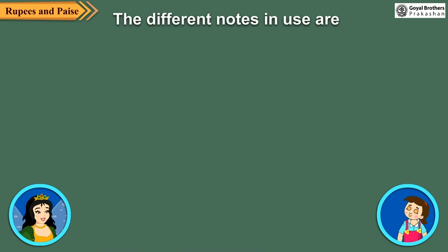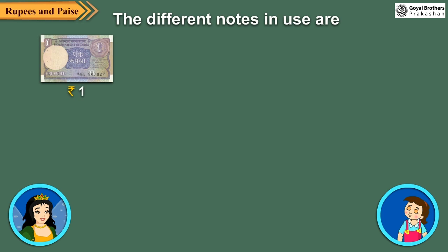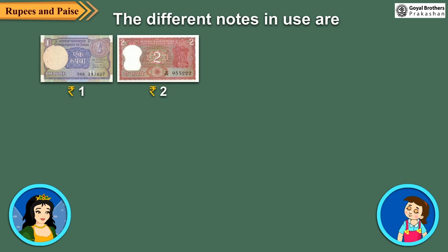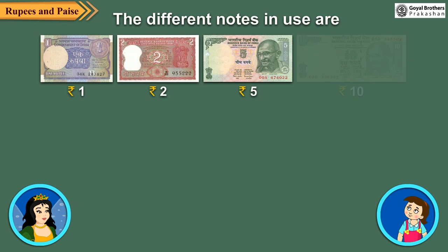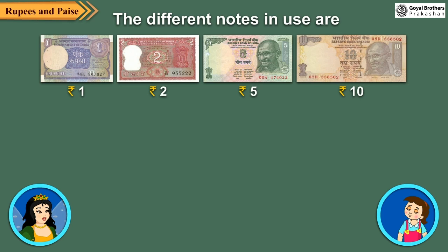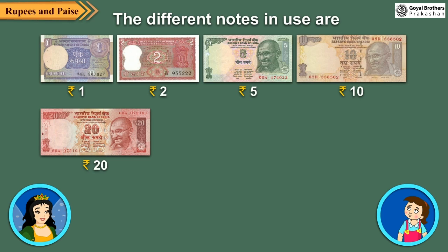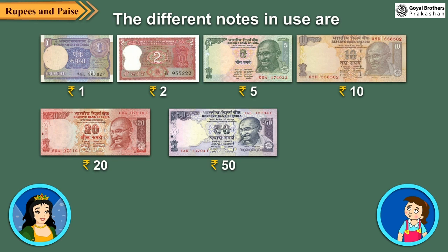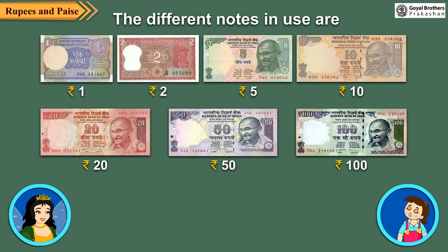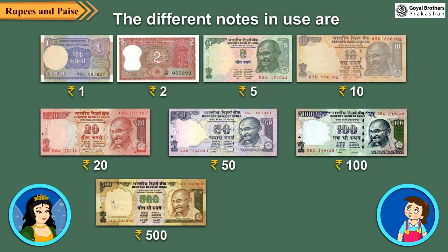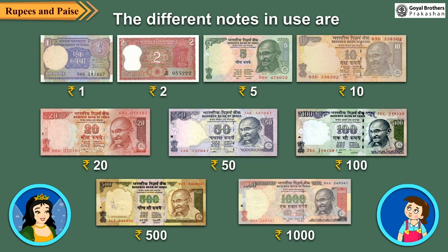The different notes in use are 1 rupee, 2 rupees, 5 rupees, 10 rupees, 20 rupees, 50 rupees, 100 rupees, 500 rupees, and 1,000 rupees.